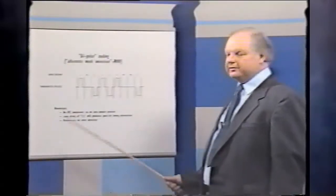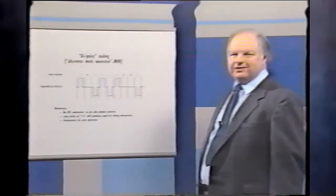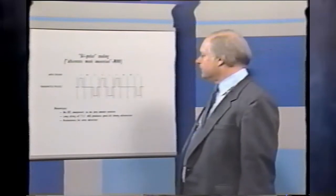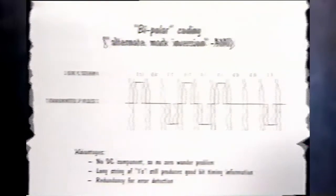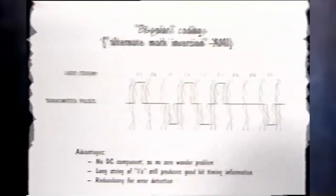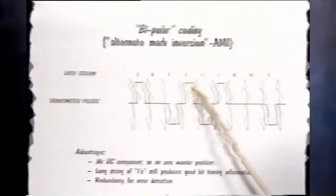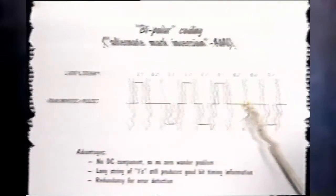The term bipolar still appears in other parts of the literature, so we need to know what it's been called. The principle of alternate mark inversion is this: a binary one is sent as a pulse, and a binary zero is sent by a period in which there is no pulse. But there's one additional wrinkle — every other pulse is sent of alternating polarity: plus, minus, plus, minus, plus, minus. The binary zeros are periods during which there is no pulse at all.